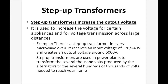Step up transformers increase the output voltage. They are used to increase the voltage for certain appliances and for voltage transmission across large distances. For example, there's a step up transformer inside every microwave oven — it receives an input voltage of 120 to 240 volts and creates an output voltage of around 5,000 volts. Step up transformers are also used in power plants to transform the several thousand volts produced by alternators to the several hundreds of thousands of volts needed to reach your home, so that any power lost along the way is accounted for.